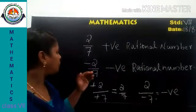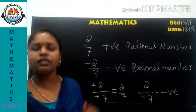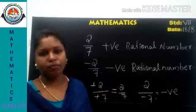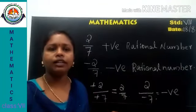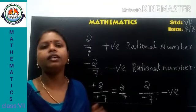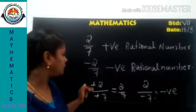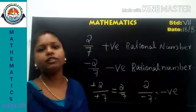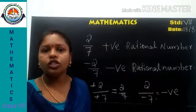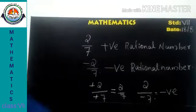Since the numerator and denominator are of different sign, 2 by negative 7 will be a negative rational number. So: if numerator or denominator is negative (but not both), that is a negative rational number; if both are positive or both are negative, that is a positive rational number.